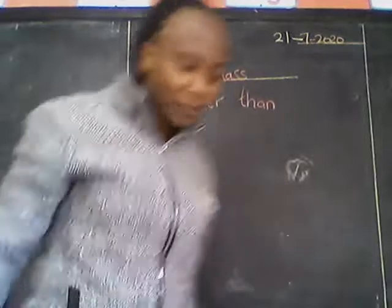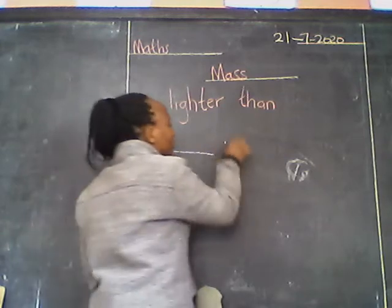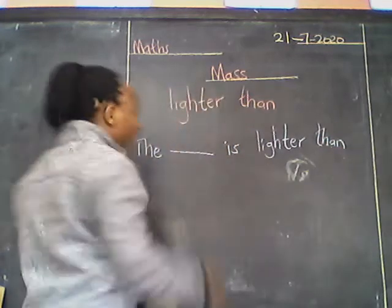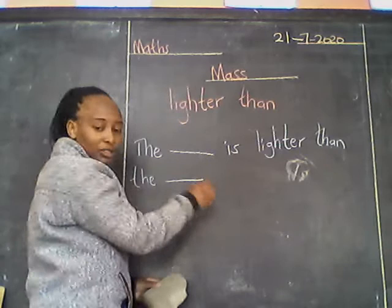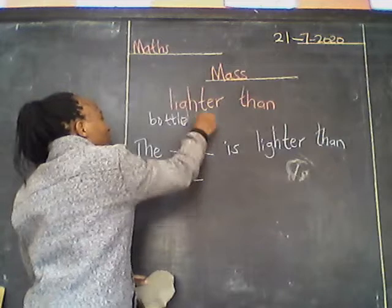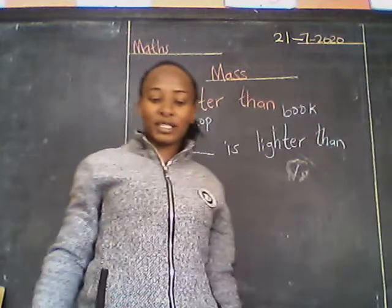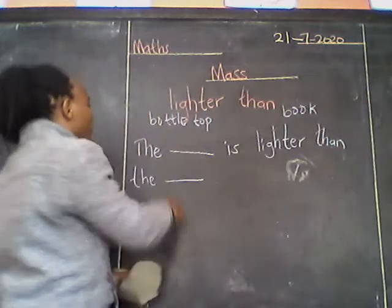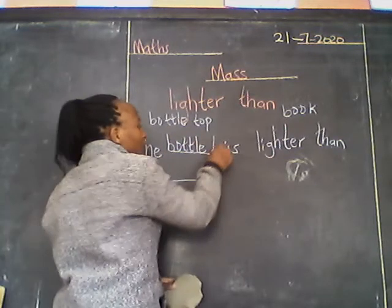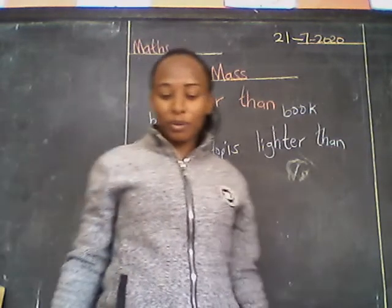Let's go to the next page. Number one is written, just an example: the dash is lighter than the dash. They have drawn a bottle top and a book. Between the bottle top and the book, which one is lighter? Very good — the bottle top. You write: the bottle top is lighter than the book. Don't draw when you are putting the answers. That's how you write.